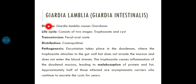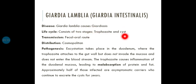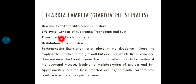Giardia lamblia and Giardia intestinalis cause a disease known as Giardiasis. The life cycle consists of two stages: trophozoite and cyst — as discussed in my previous lecture about protozoan life stages. Transmission is through the fecal-oral route, meaning it is transmitted through fecally contaminated food or water.